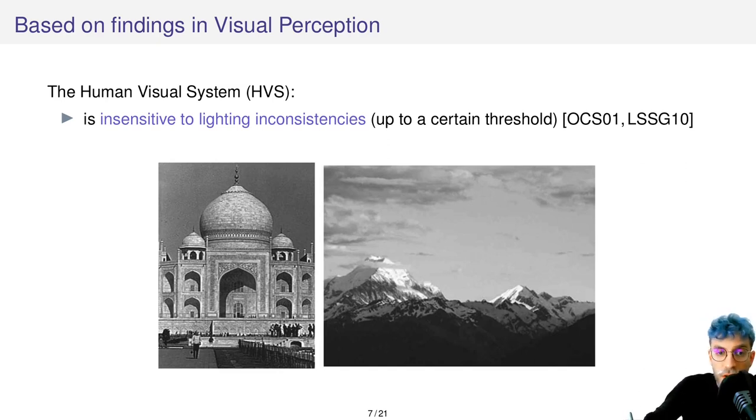So if you consider the mountains here, they are actually lit from two different directions of light. Still it's quite difficult to see that at first glance.